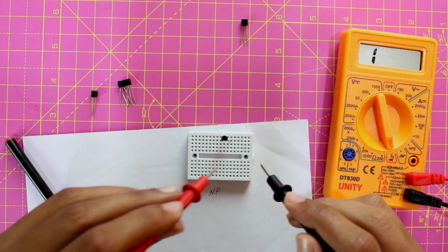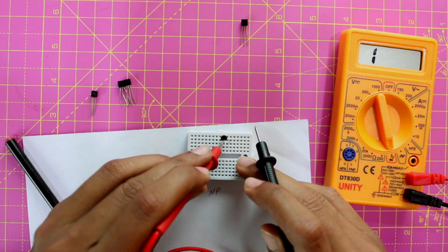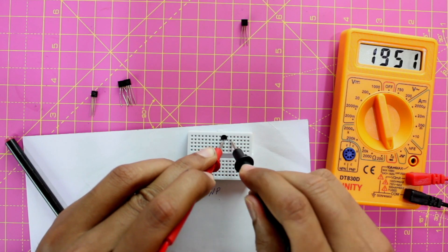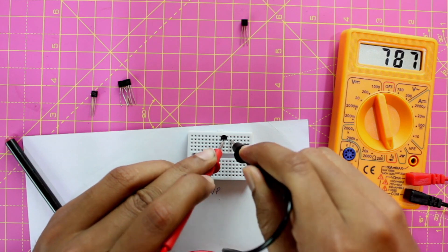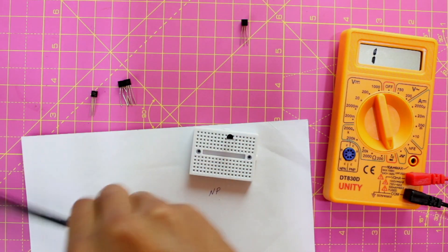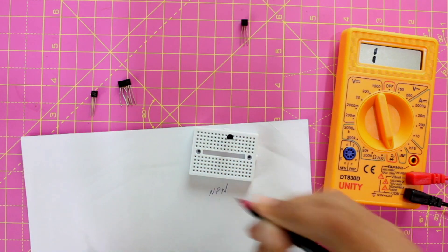Now I know that the center pin is P. I will keep the P here and N here. Again I am getting a voltage drop of 787 millivolts. So I know that the third pin is N. So again now we know that this is an NPN transistor.